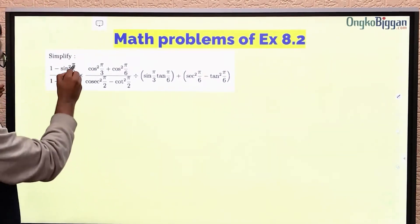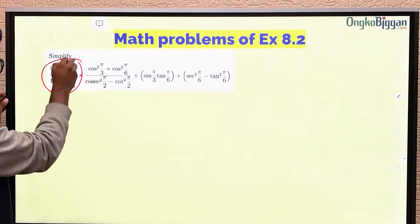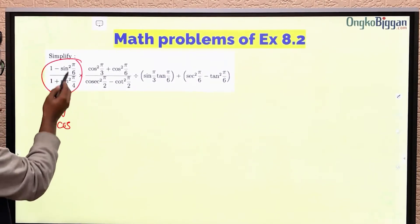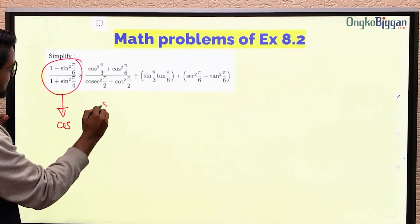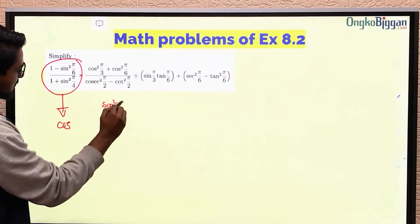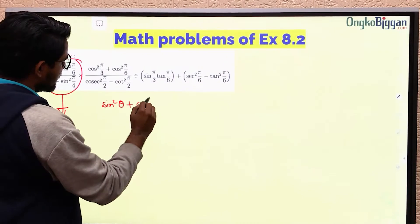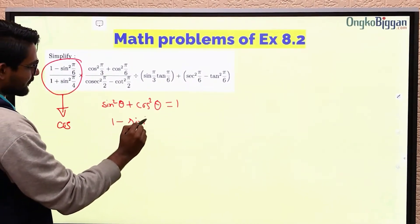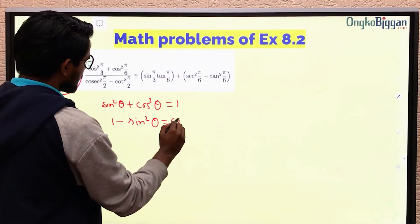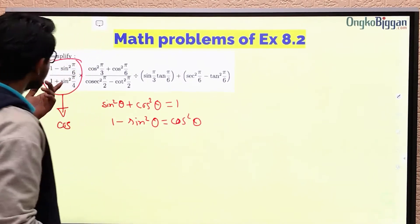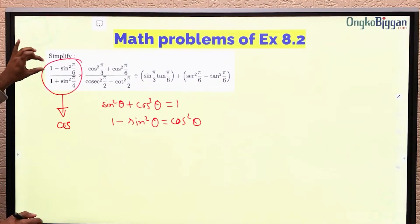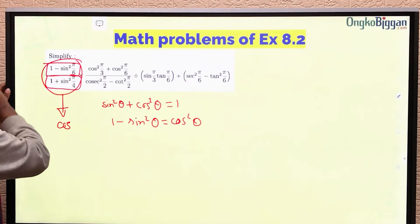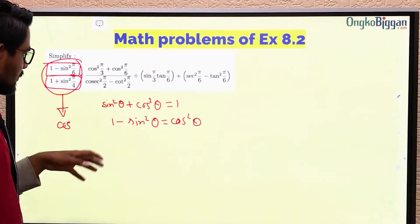In this part we can convert into cosine function, because we know that sin²θ plus cos²θ equals 1, so 1 minus sin²θ equals cos²θ. I can easily see that I can convert the numerator and the denominator individually into cosine function quite easily.